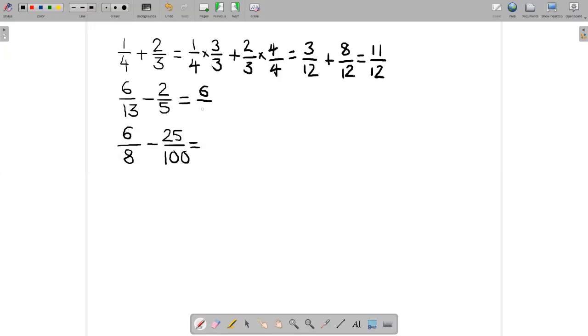Let's convert six thirteenths by multiplying by five over five. Then let's find an equivalent fraction to two fifths by multiplying by 13 over 13. Now we have six thirteenths times five over five, so that comes to 30 over 65.